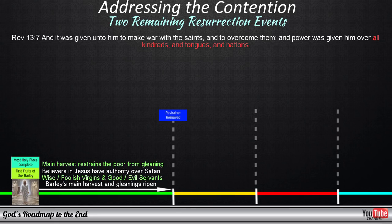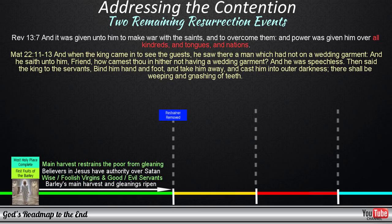In one of the kingdom parables, we encounter a person who was found present at the wedding without the proper wedding attire. And this person, just as the foolish virgins and the evil servants, is also cast out into outer darkness, where there will be weeping and gnashing of teeth. And when the king came in to see the guests, he saw there a man which had not on a wedding garment. And he saith unto him, Friend, how camest thou in hither not having a wedding garment? And he was speechless. Then said the king to the servants, Bind him hand and foot, and take him away, and cast him into outer darkness. There shall be weeping and gnashing of teeth.